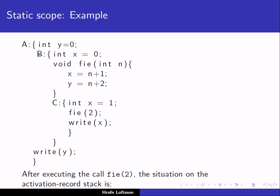So block B must already be active. Keeping that in mind, we always must be able to find the correct activation record on the stack for a reference to a non-local variable — in our case, for a reference to X or a reference to Y.